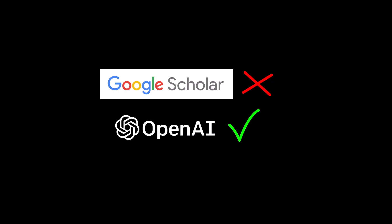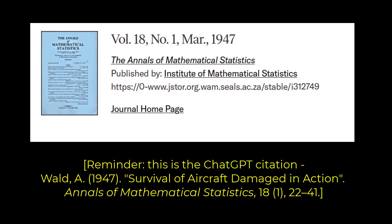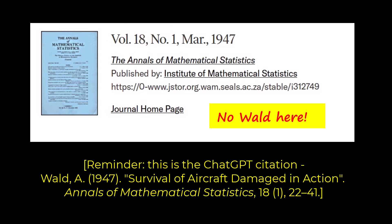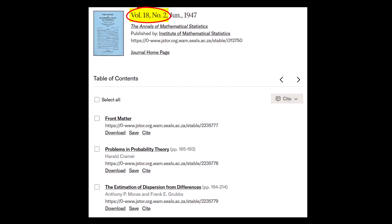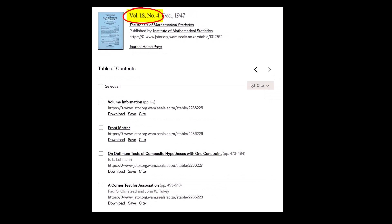At this stage, to be completely honest, I thought that Google was mistaken and ChatGPT was right. So I logged into my university library and accessed the Annals of Mathematical Statistics from 1947. The volume number, which was 18, matched what was supplied by ChatGPT, so I checked issue 1. I found no sign whatsoever of a paper by Abraham Wald in that issue. Just to be sure, I then checked the second, third, and fourth issues of volume 18 from 1947.